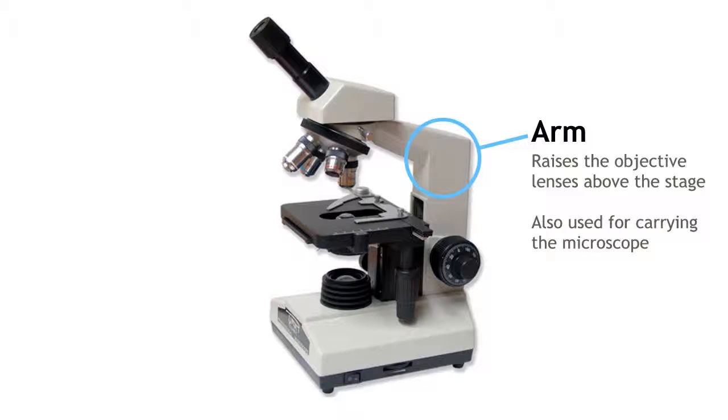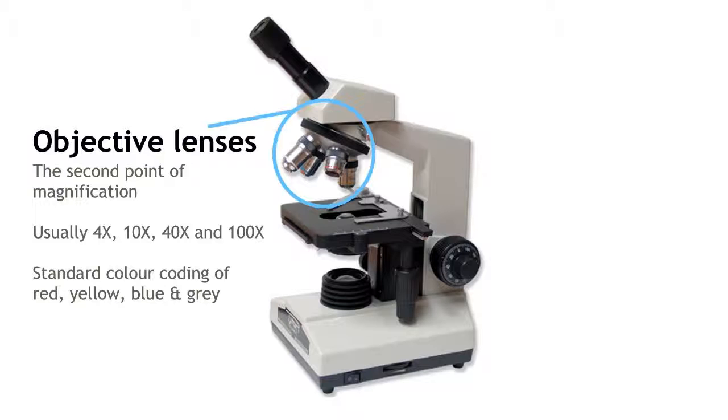The objective lenses are the second point of magnification. They revolve around on what is called the nose piece. There are usually four objective lenses, color coded for easy recognition.